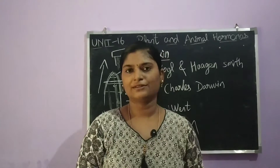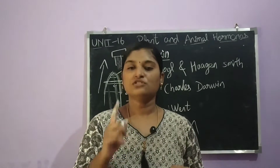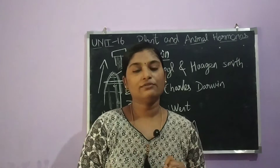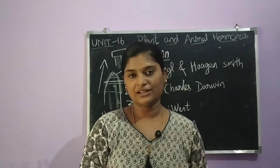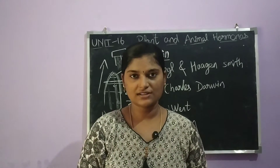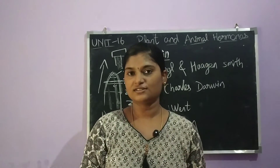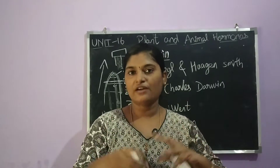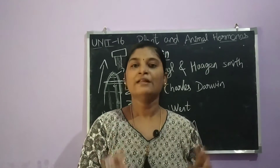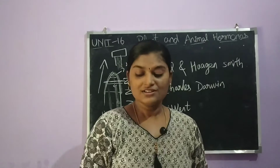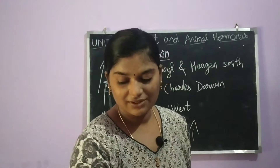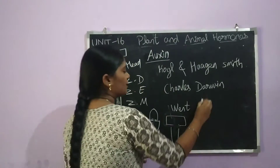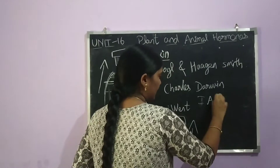So there are two types of auxins. The first one is natural auxin, and the second one is synthetic auxin. Natural auxin is the hormone that is naturally released from inside the plant. An example of natural auxin is IAA.